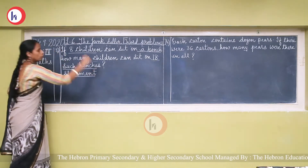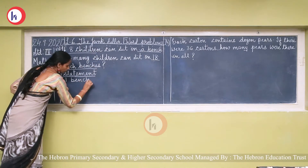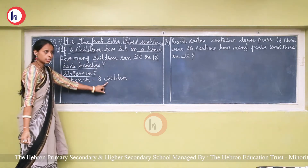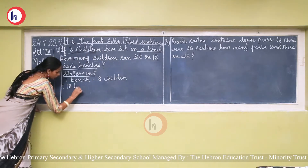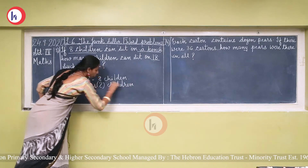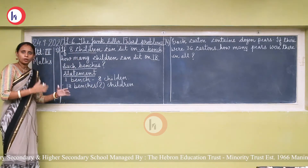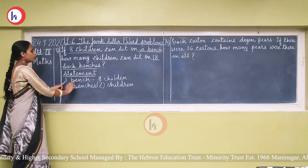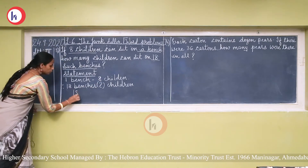Statement: On one bench, 8 children can sit. On 18 benches, how many children can sit? The value of one bench is given (8 children), and the value of more than one — 18 benches — is being asked. So we do multiplication.